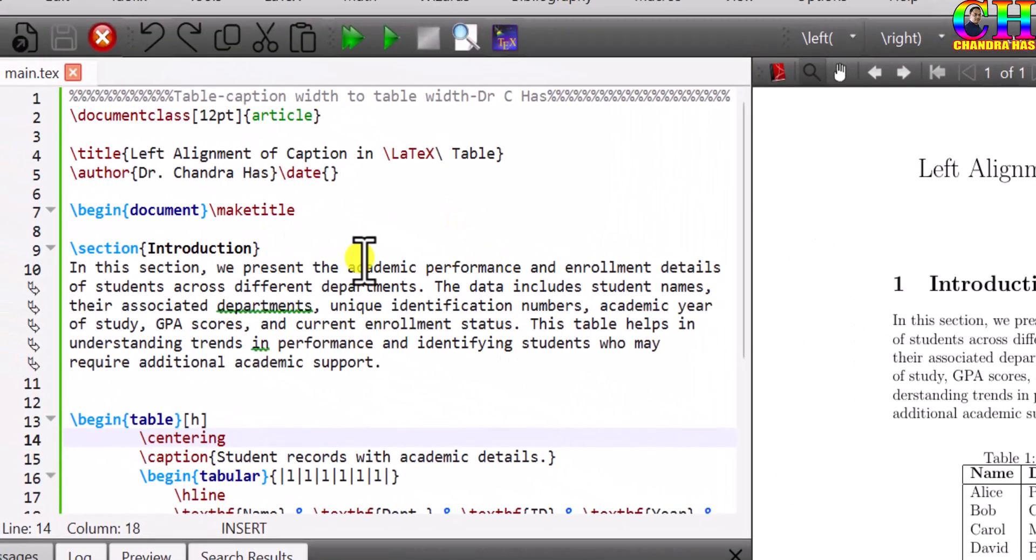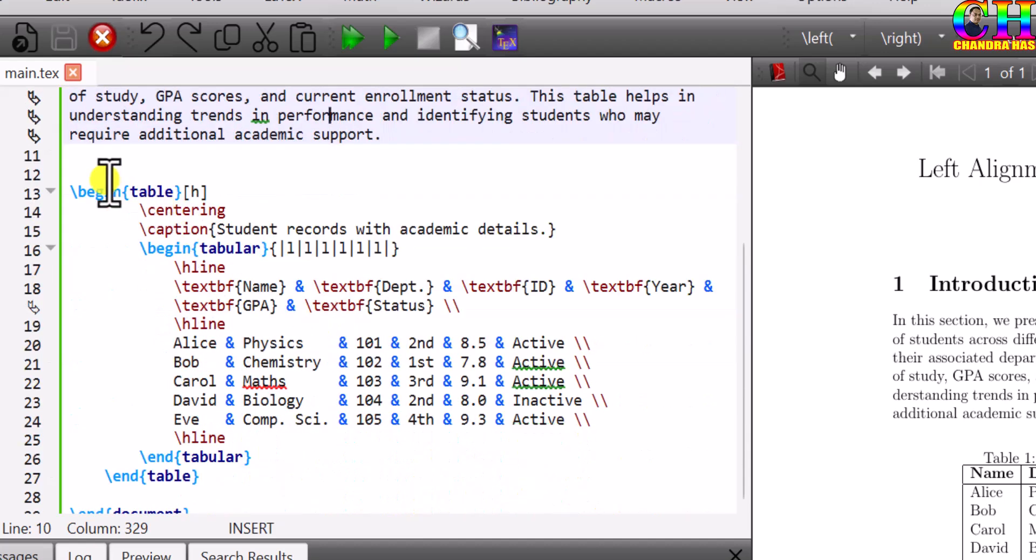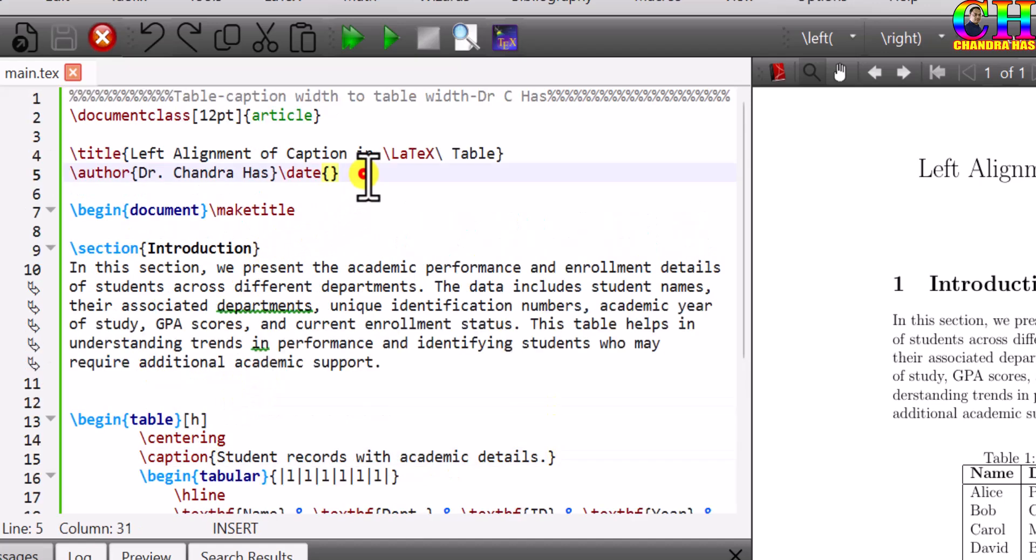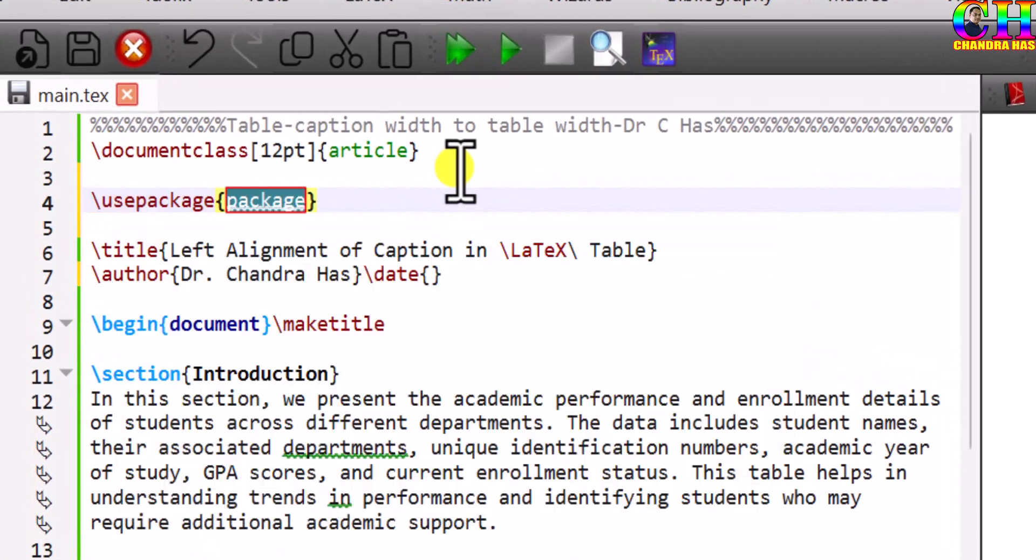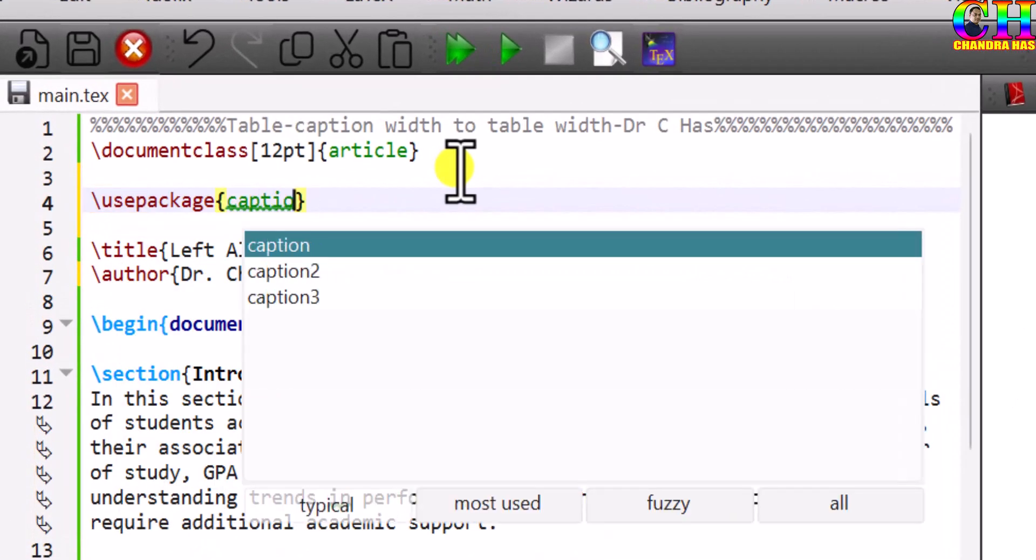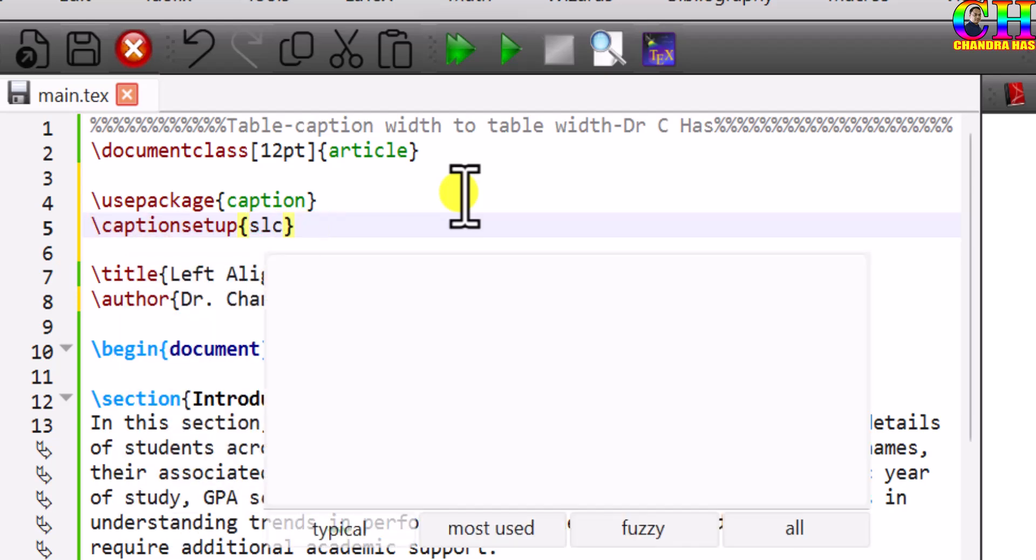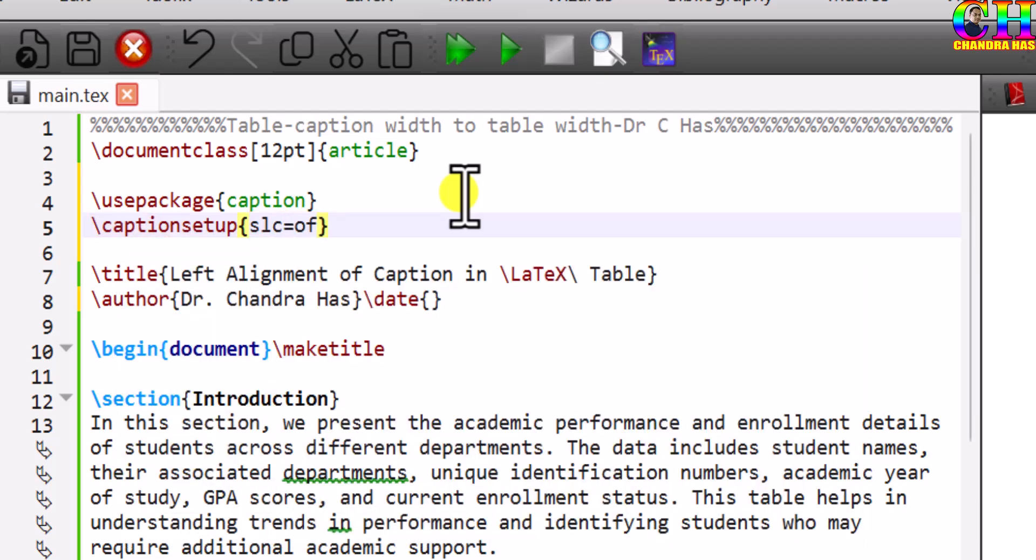Here I have a very simple document. Document class is article. There is one example of table at this place. This is the caption. For aligning this caption to the left, we can use caption package. Just write caption. Then caption setup SLC equals to off. Here SLC means single line check defined in the caption package.